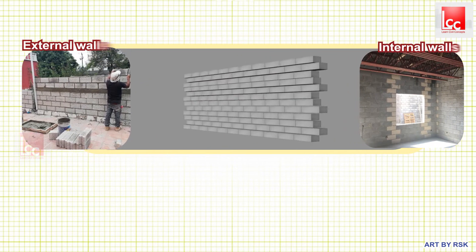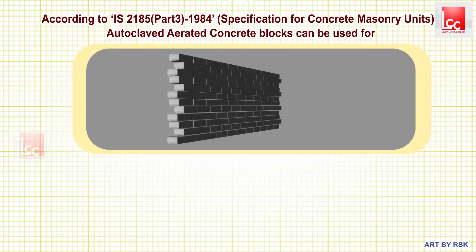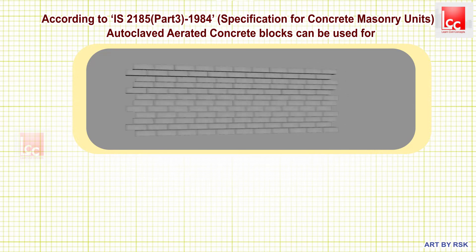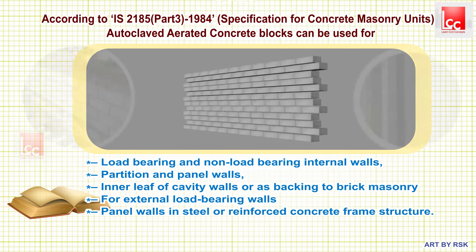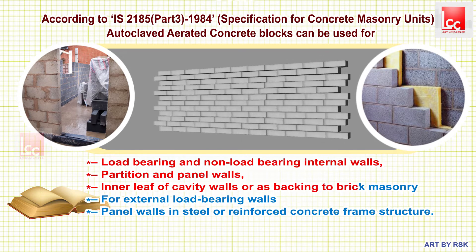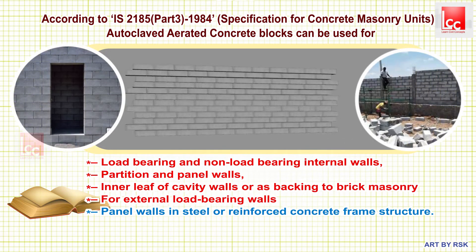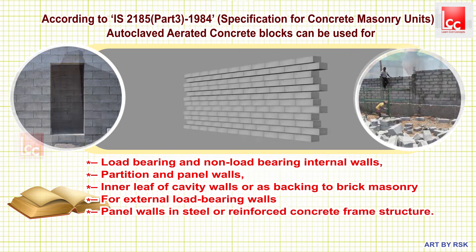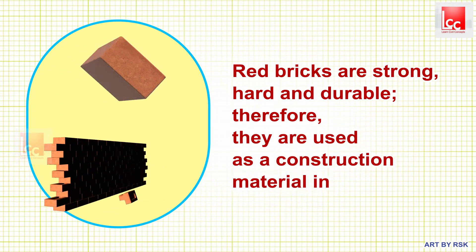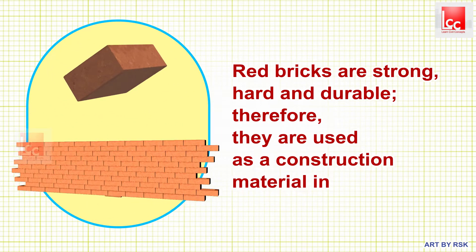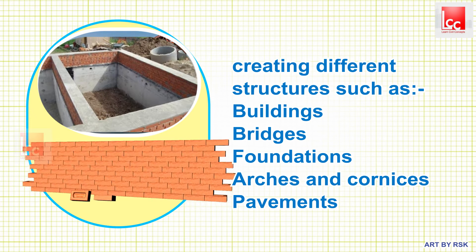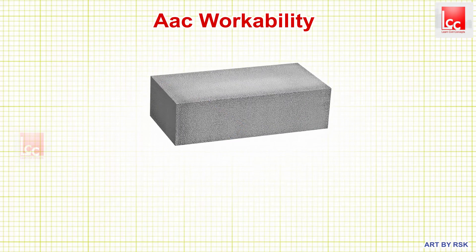AAC blocks can be used in building both internal and external walls. According to IS 2185 Part 3 1984 — specification for concrete masonry units — autoclaved aerated concrete blocks can be used for load-bearing and non-load-bearing internal walls, partition and panel walls, inner leaf of cavity walls, or as backing to brick masonry, or external load-bearing walls and panel walls in steel or reinforced concrete frame structures. Bricks, as structural units that are strong, hard, and durable, are used in creating different structures such as buildings, bridges, foundations, arches, cornices, and pavements.